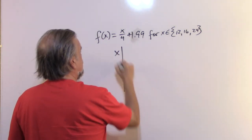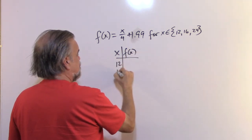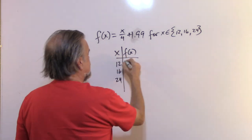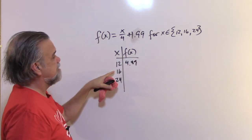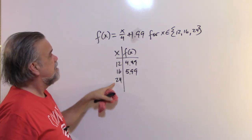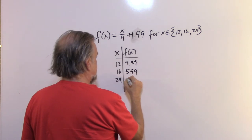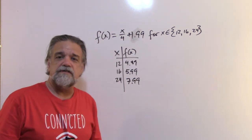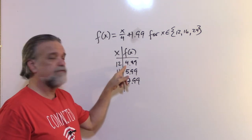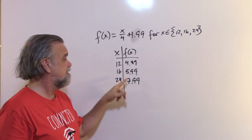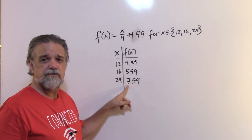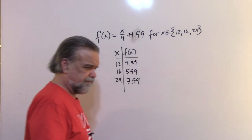Making a table: if x = 12, f(x) = 12/4 + 1.99 = 3 + 1.99 = 4.99. If x = 16, f(x) = 4 + 1.99 = 5.99. If x = 24, f(x) = 6 + 1.99 = 7.99. This function gives the cost of a soda at a movie theater: a 12 oz soda costs $4.99, 16 oz costs $5.99, and 24 oz costs $7.99 — which is expensive, but I digress.